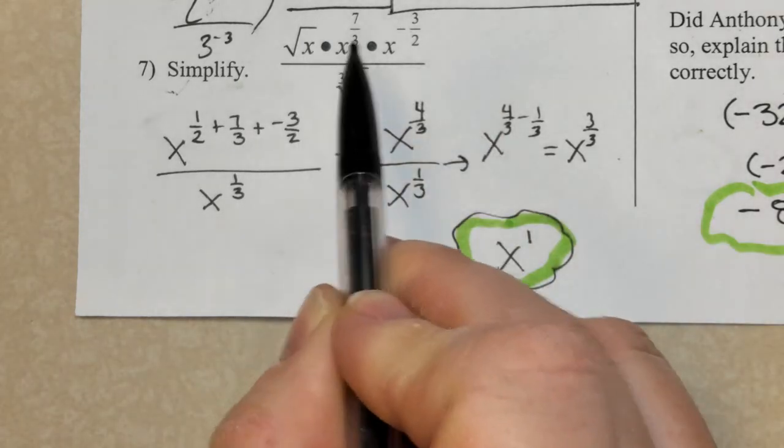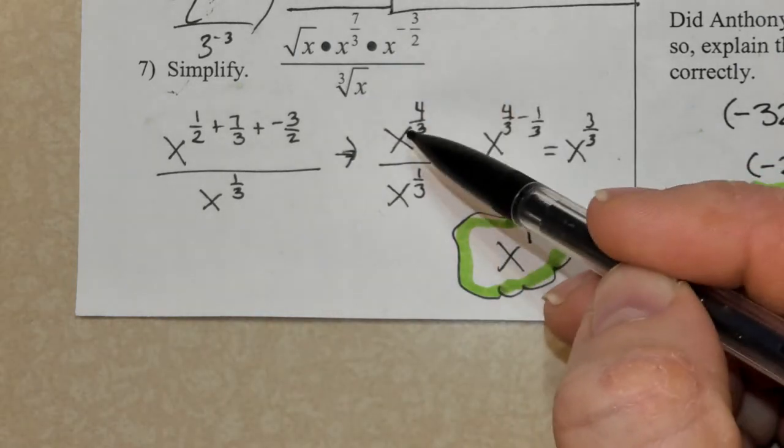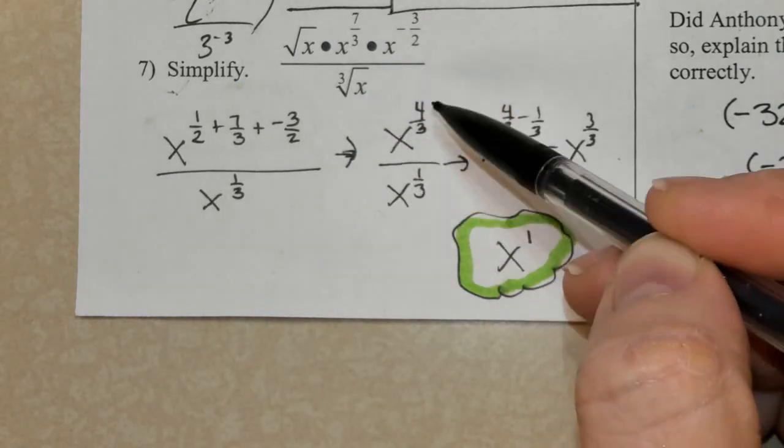Just like when you have the same base and you are multiplying, you add the exponents. Similarly, when you have the same base and you're dividing, you subtract them.